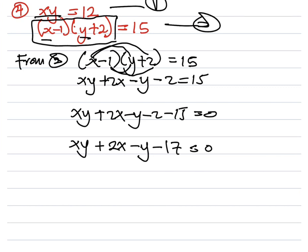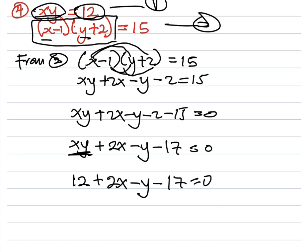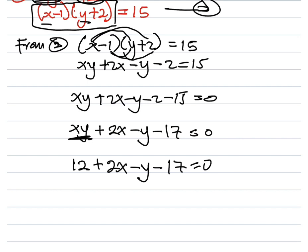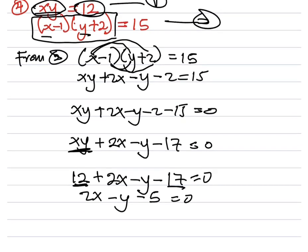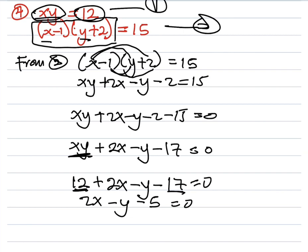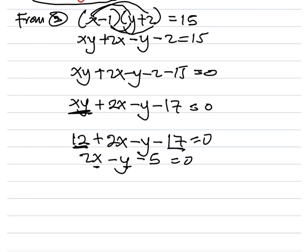From equation 1, xy = 12. Substituting into our expanded expression: 12 + 2x − y − 17 = 0, which simplifies to 2x − y − 5 = 0. This has simplified to a linear equation. We make y the subject: y = 2x − 5. Call this equation 3.